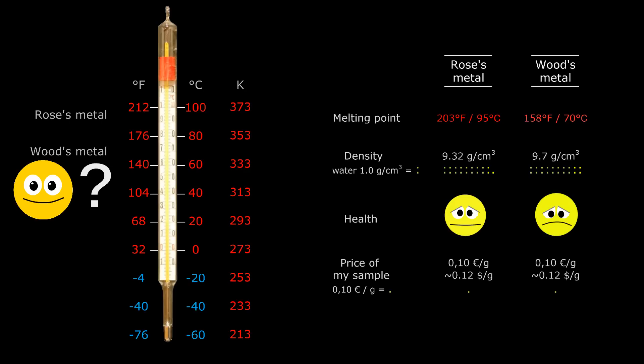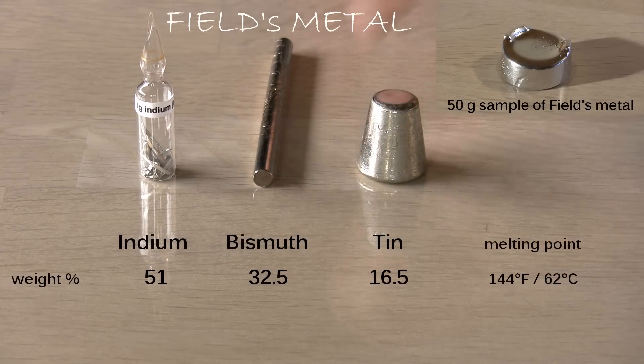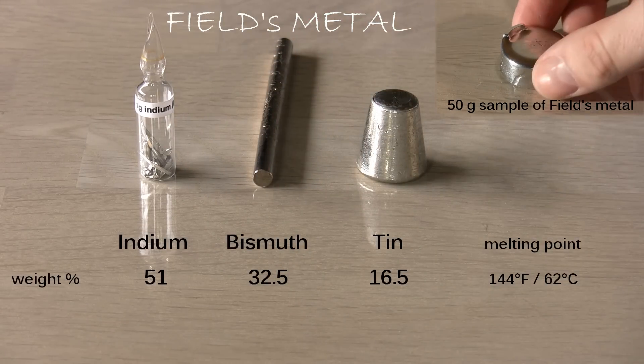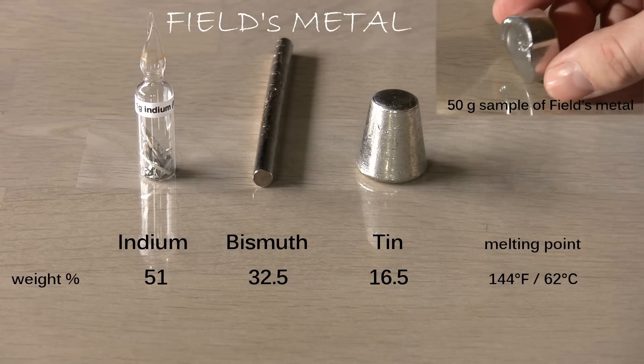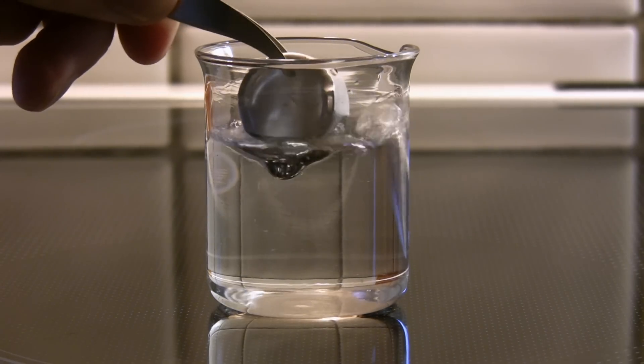The solution is Field's metal. Field's metal is a fusible alloy of indium, bismuth and tin. It melts at 144 degrees Fahrenheit and all components are non-toxic. I like this alloy. So easy to melt and very shiny.